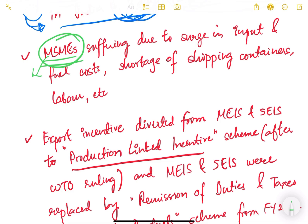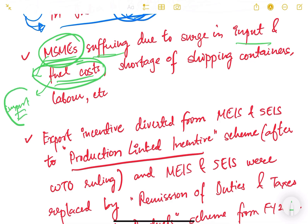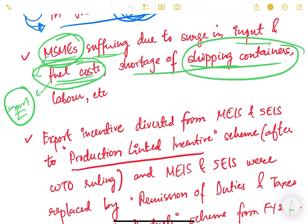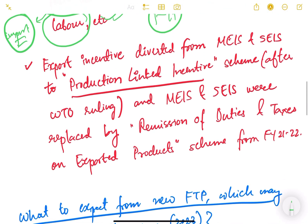MSMEs, which are the growth engine of our country, are suffering due to the surge in fuel costs. Most of our oil we import from other countries, and because fuel costs are increasing, MSMEs are suffering. We are not able to sufficiently address this issue. There is also a shortage of shipping containers, shortage of labor — all these are in short supply — and MSMEs are not able to benefit from the foreign trade policy.